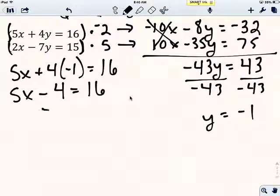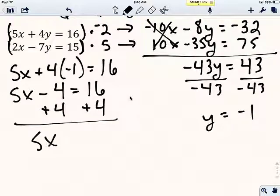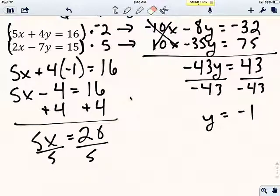Now I can add 4 to both sides. Okay, so I'm going to get 5x equals 20. Now I divide both sides by 5. Sorry, I'm going to make that. That's a 20, not a 28. 20. Good. And I see that x equals 4.